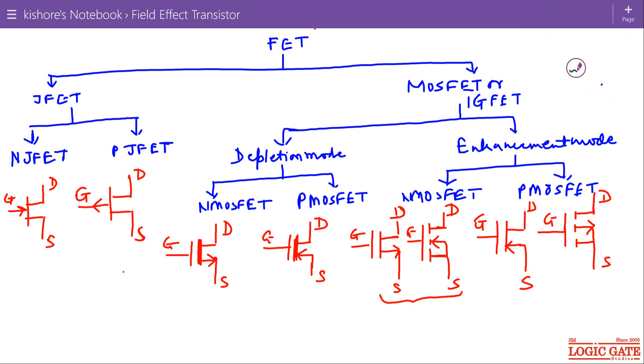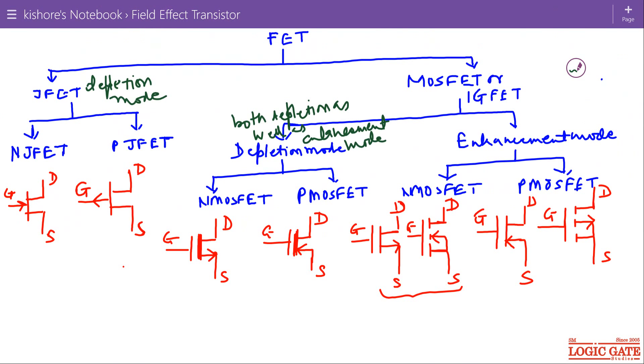Now this JFET always operates in depletion mode. Depletion mode MOSFET can operate in both depletion as well as enhancement mode. And this enhancement mode MOSFET operates only in enhancement mode.